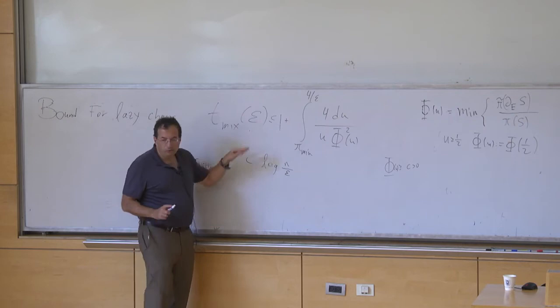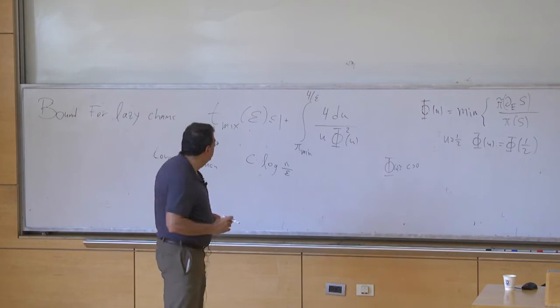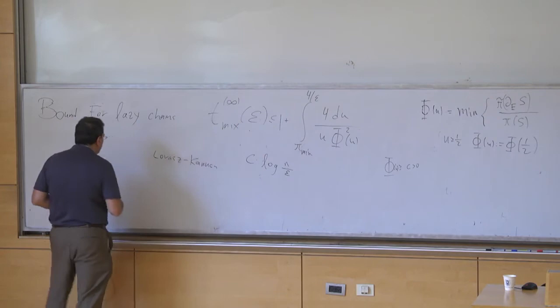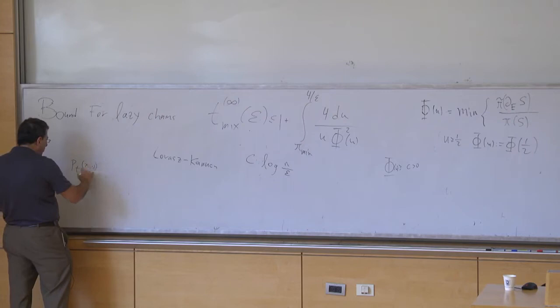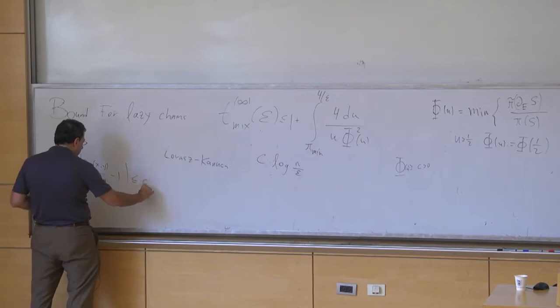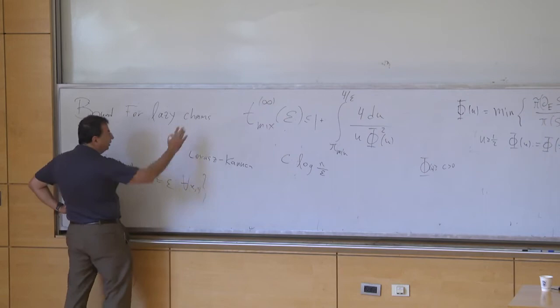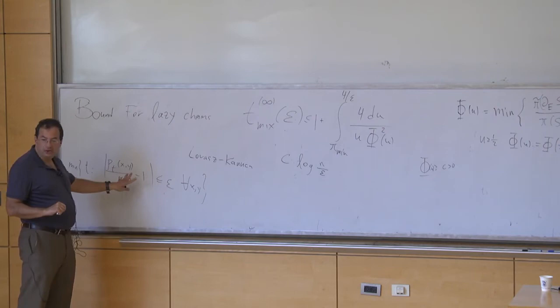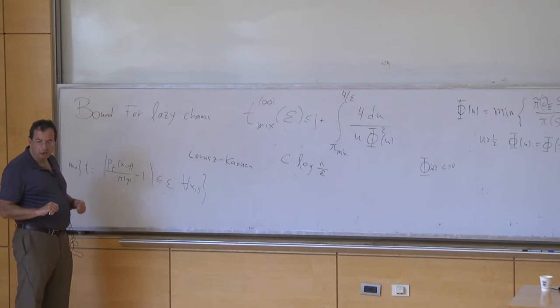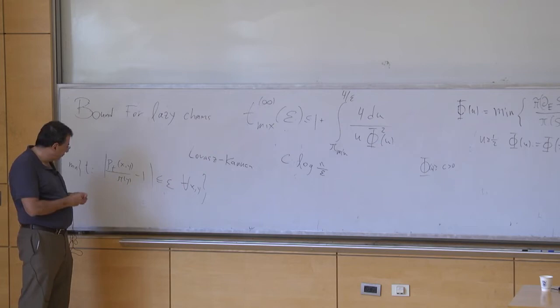The L-infinity mixing time is: t_mix^∞(epsilon) is the first t so that |p_t(x,y)/pi(y) - 1| < epsilon for all x and y. This is stronger than the total variation bound, which follows from it by averaging. The same type of bounds were already known in infinite graphs — instead of bounding the mixing time, you bound the transition probabilities themselves.